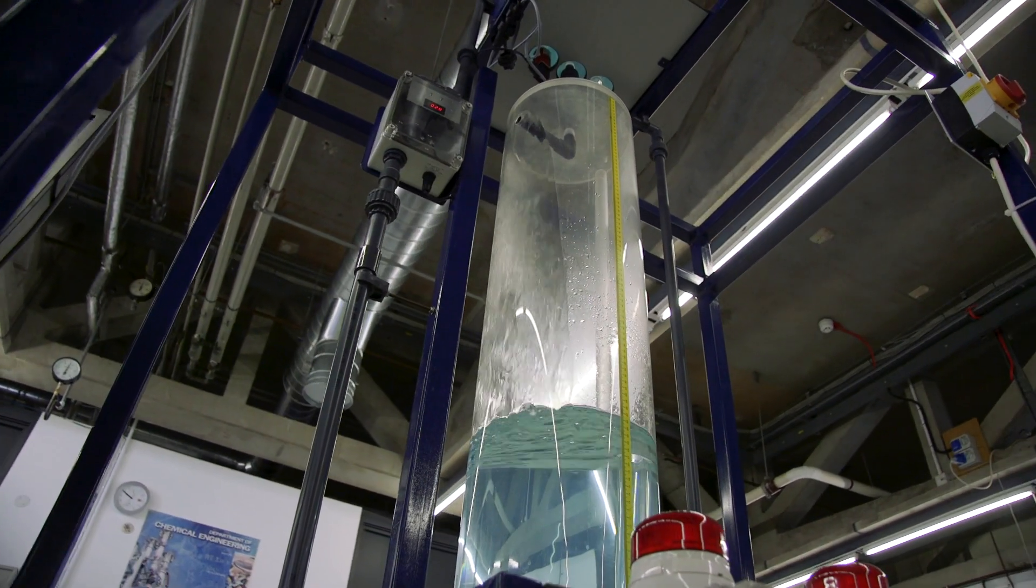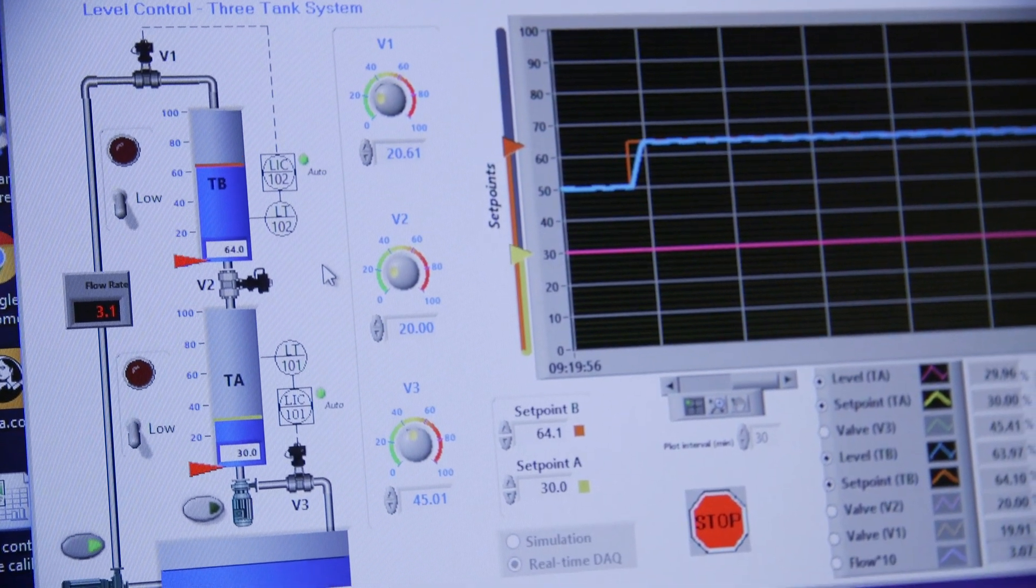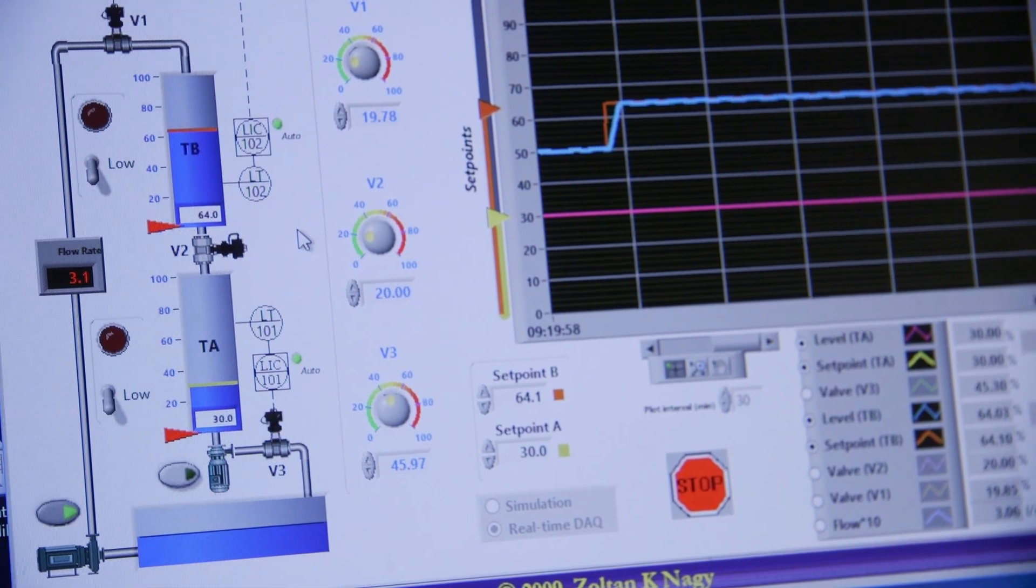This rig gives us insight into how difficult manual control can be and how useful it is to have automated control. This type of measurement and response system is used widely among processing plants in industry.